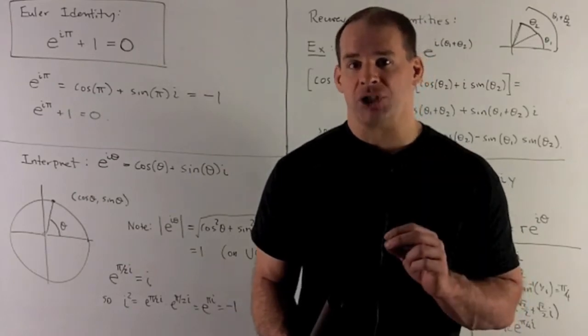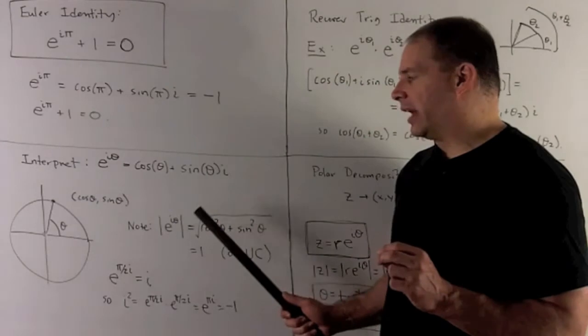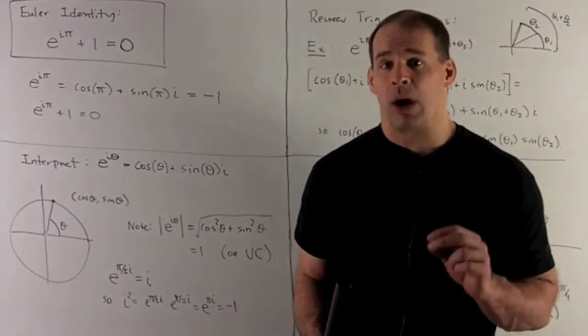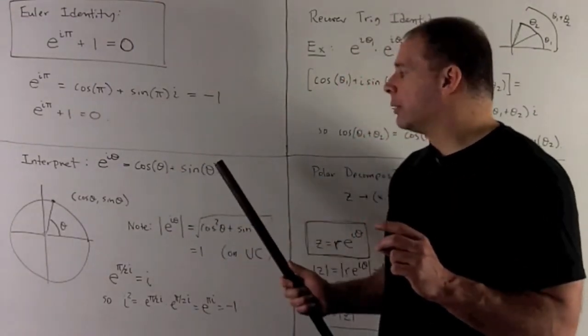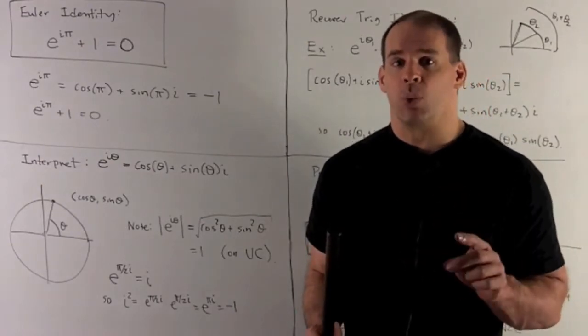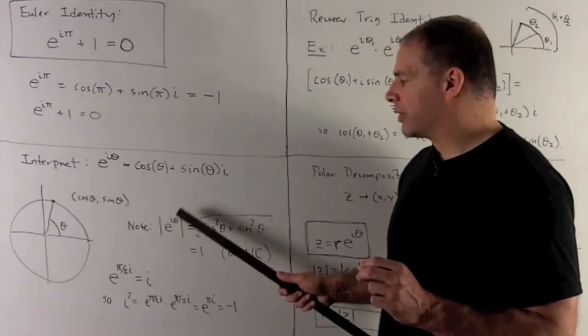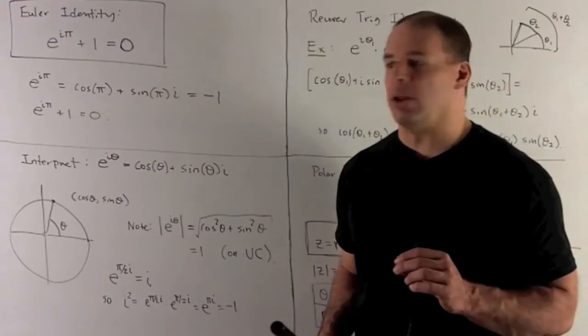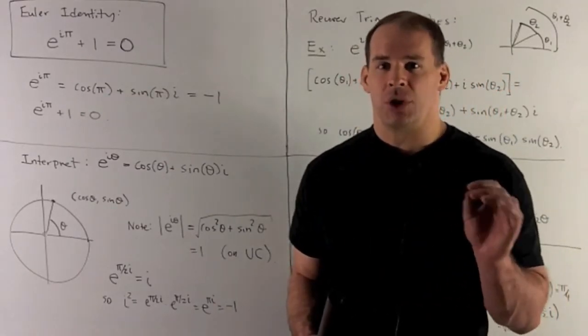Let's recheck the modulus. So I want to take our modulus of E to the I theta. How do I do that? We take X and Y, square them, add them, take the square root. So I'm going to take cosine squared plus sine squared gives me a 1. Square root of 1 is 1. So we note, if we think of this as the length from 0, if the length from 0 is going to be 1, then this is definitely on the unit circle.